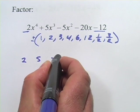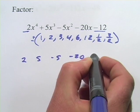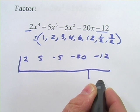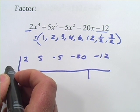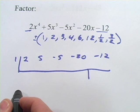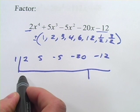So 2, 5, negative 5, negative 20, and negative 12. We'll set up our thing here. That's where the remainder goes. And let's see. I think I'll try with, oh, I don't know, let's try 1. It makes the math easy to start with lower numbers.